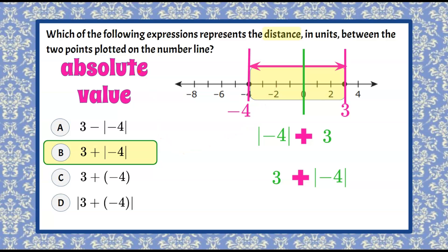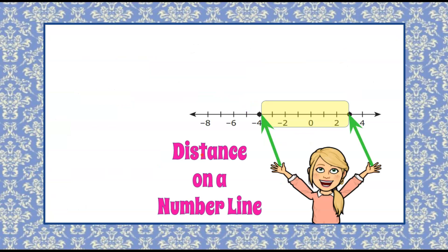So there you have it. Representing the distance of these two plotted points is answer choice B, three add the absolute value of negative four. And that is how you find distance on a number line.